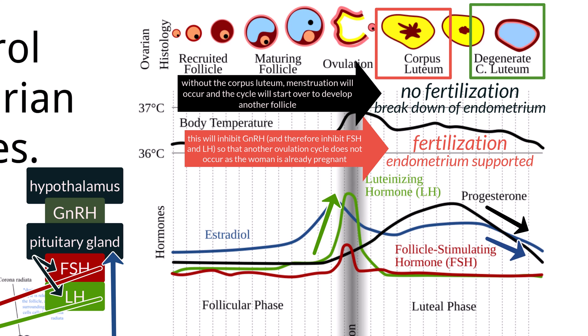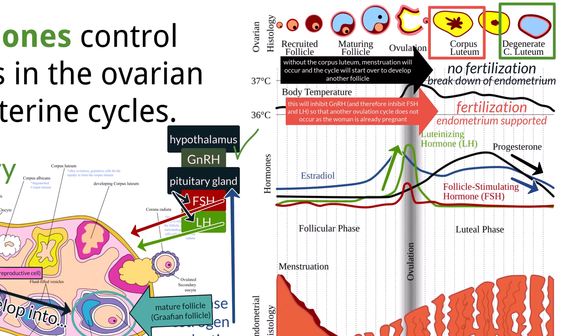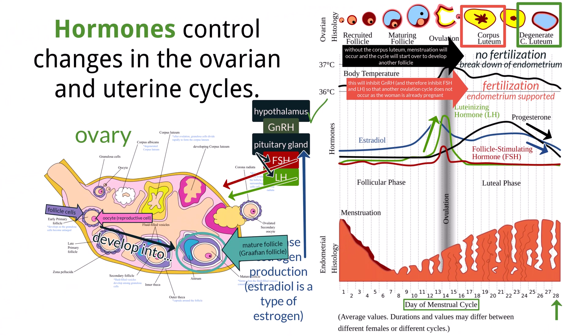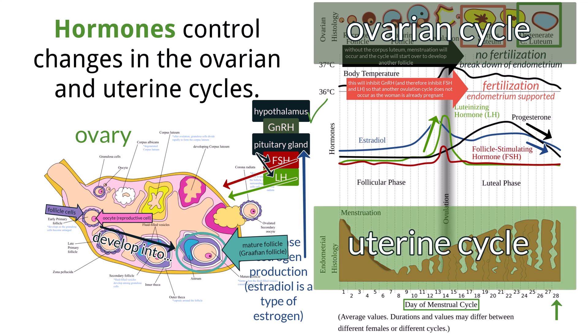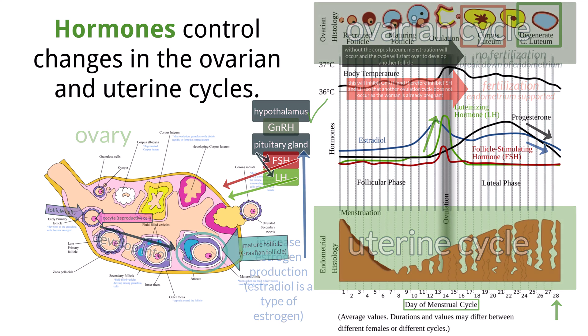When progesterone and estrogen drop, gonadotrophin-releasing hormone is produced. We can divide the cycle into two components: the ovarian cycle, which controls the production and release of eggs and the cyclic release of estrogen and progesterone; and the uterine cycle, which controls the preparation and maintenance of the lining of the uterus in order to receive a fertilized egg. It is critical that the timing of these two be synchronous.